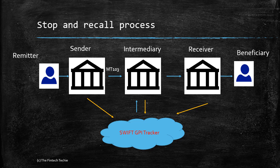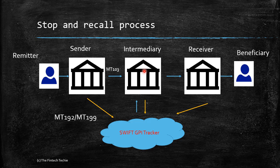Let's look at the flow. You have the remitter, the sender, the intermediary bank, the receiver, the beneficiary, and the Swift GPI tracker. The sender sends out an MT103, which is currently at the intermediary bank. The sender then decides the payment was sent by mistake and sends out an MT192 or an MT199 message.